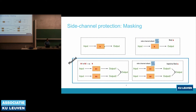In the masked version, we split the secret key into multiple shares. For first-order masking, we split it into two shares and perform the algorithm on each share separately. If an attacker probes only once, they will get information about S1 — one share of the secret — but not the other. Since S1 and S2 are independent, it becomes hard to find the whole secret S.